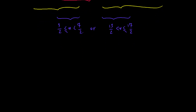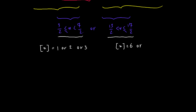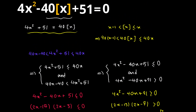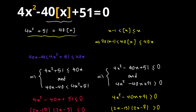For these two intervals, we have some possibilities for the value of floor of x. For the first interval, if x lies between 3 halves and 2 the floor is 1; between 2 and 3 it's 2; between 3 and 7 halves it's 3. Similarly, for the second interval, floor of x can be 6, 7, or 8. So we have six possible values for floor of x, and we're going to plug these into our original equation and solve for x.